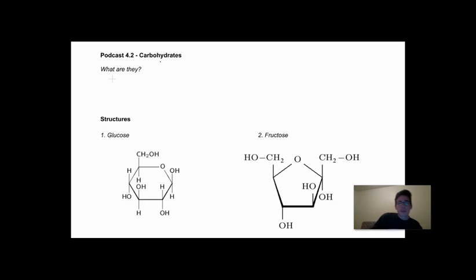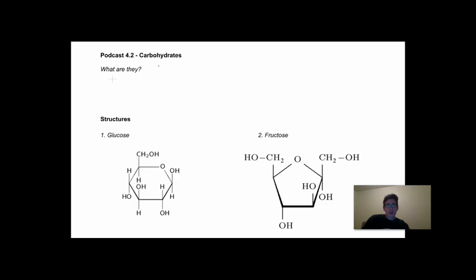This is biology podcast 4.2 of the hydrocarbons and polymers chapter, or the macromolecules chapter. We've already looked at hydrocarbons and what they are, and a basic idea of what a polymer is. Now we need to start getting into the larger part of the macromolecules. There are four, and each of these can be considered a monomer. Carbohydrates are one of the monomers that are part of larger polymers in your body and in biology.